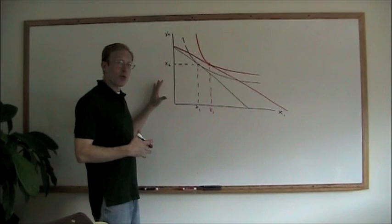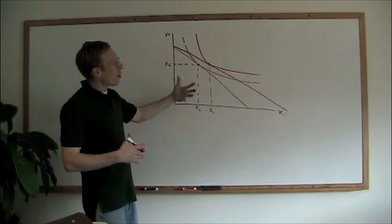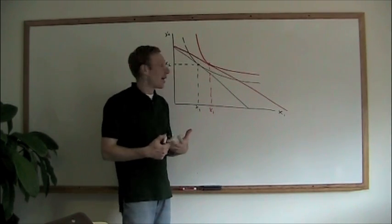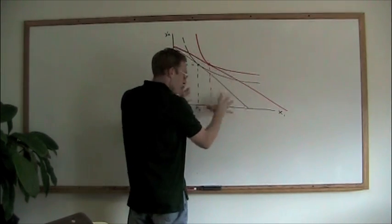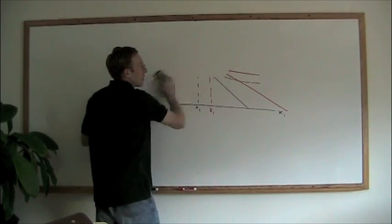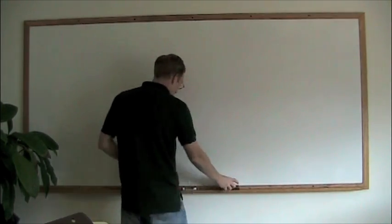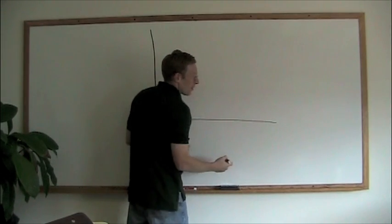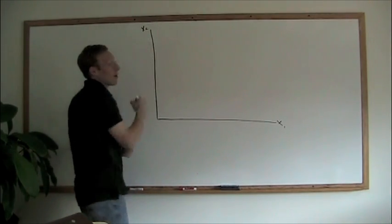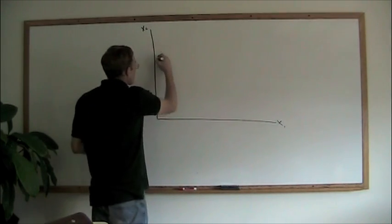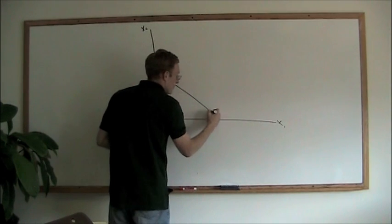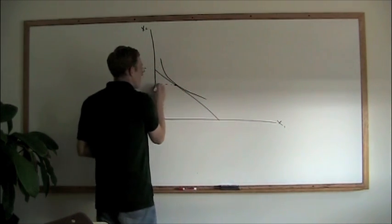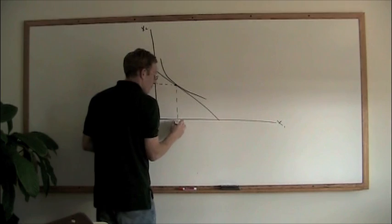The Slutsky approach is going to introduce a third indifference curve — another indifference curve to the equation. Let's blow this up a little bit and make it clearer so we can see exactly what's going on. So here we go. We're going to start off with our graph. Here's our initial budget constraint and our initial indifference curve, and here's where the two are tangent.